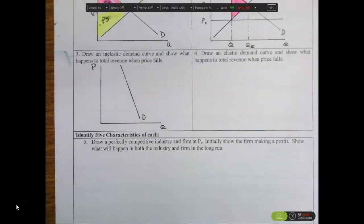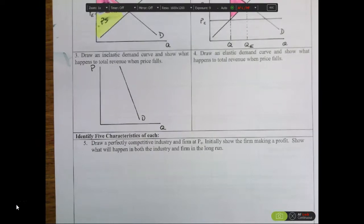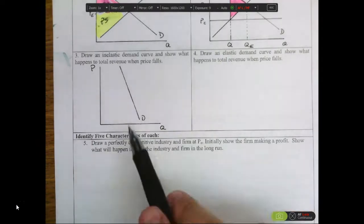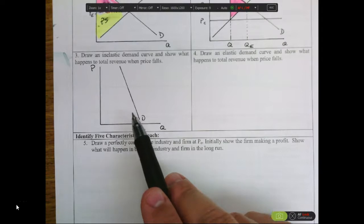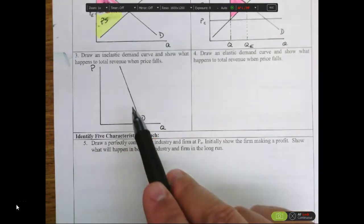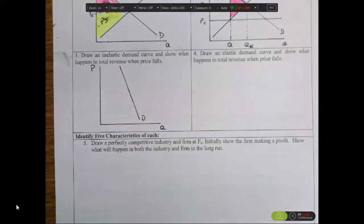This section is asking you to draw an inelastic demand curve and talk about total revenue. Inelastic demand curves are ones that tend to be more vertical. They begin to look like the letter I, which is one way to remember it - the more it looks like an I, the more inelastic it is.